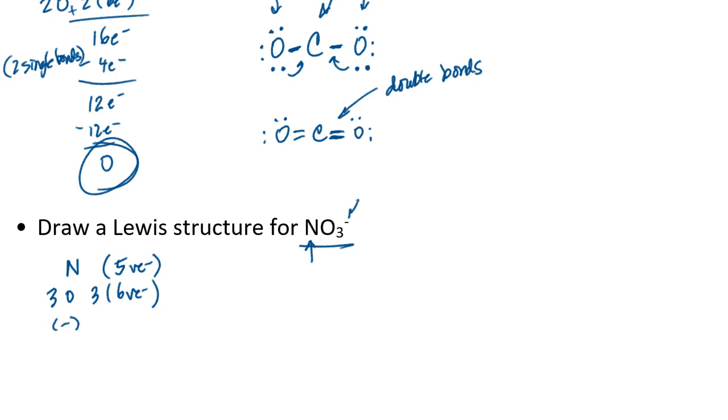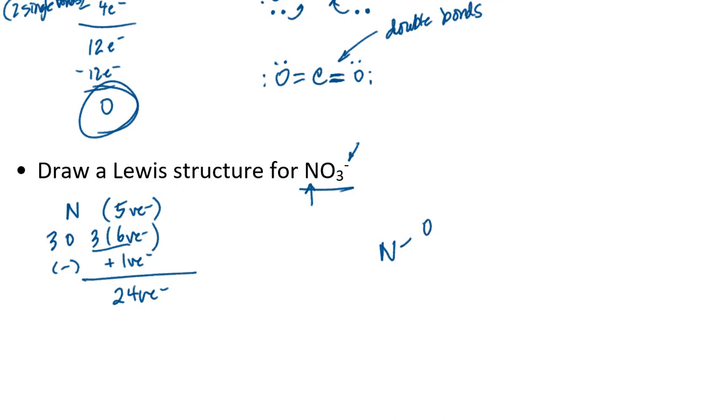But notice also I have a negative charge on this nitrate ion, so that means I have to add one more valence electron. Putting all that together, six times three is 18 plus five is 23 plus one more, that's 24 valence electrons. I'm going to put together the structure with nitrogen and connect each of the oxygens to the nitrogen. That involves six electrons, three single bonds each. I've used up six electrons for those three single bonds, which leaves me with 18 valence electrons left over.